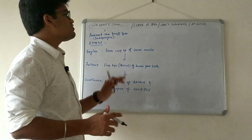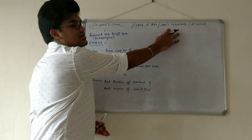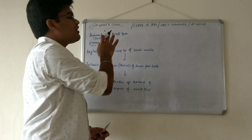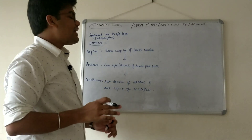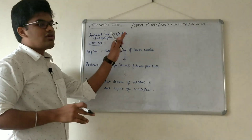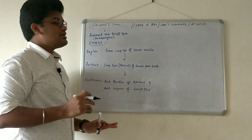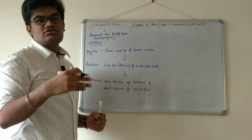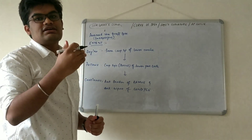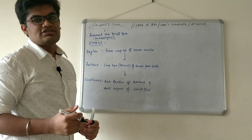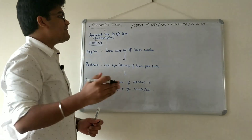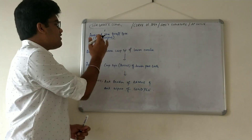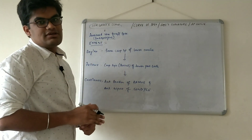The curve of Spee is also called Spee's curvature, the anteroposterior curve, or von Graff's curve, as it was found by Ferdinand von Graff Spee. He was basically an embryologist who used to study the teeth in a sagittal relationship, and during his study he figured out the curve of Spee.